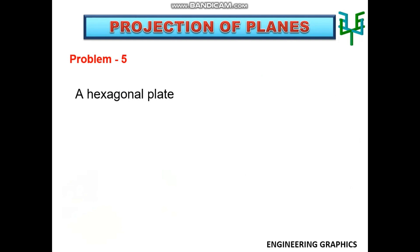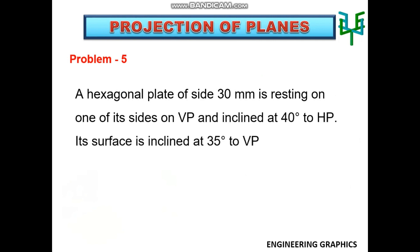A hexagonal plate of side 30 mm is resting on one of its sides on VP and inclined at 40 degrees to HP. Its surface is inclined at 35 degrees to VP. Draw its projections.